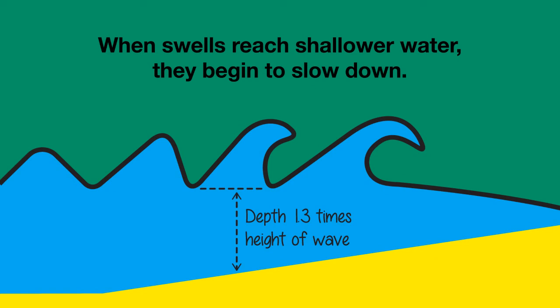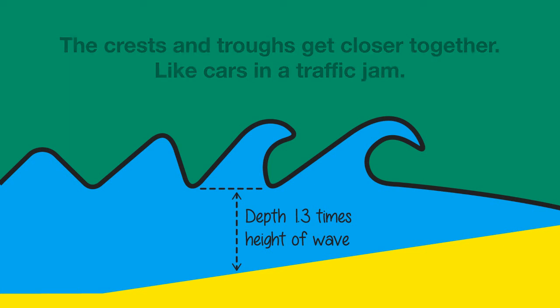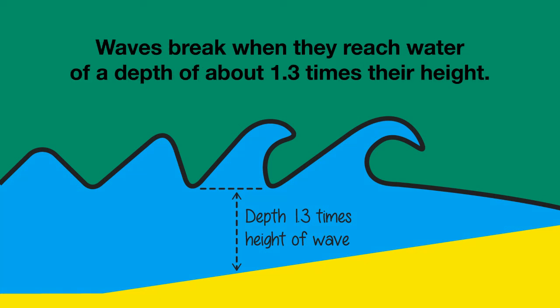Now let's go to the coasts. What happens when waves break? When swells from the open sea reach shallower water, they begin to slow down. As they slow down, the crests and troughs get closer together, just as cars get closer together in a traffic jam. So the length of the wave gets smaller. And because the bottom pushes up all the energy of the waves, it also becomes higher. When waves reach water of a depth of about 1.3 times their height, the wave breaks.